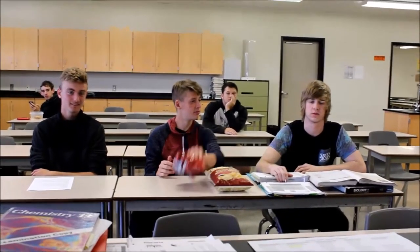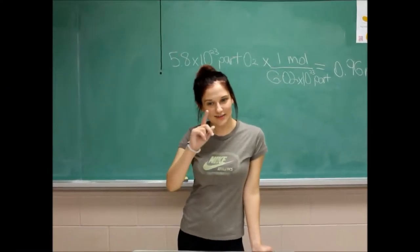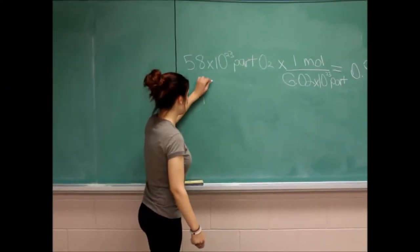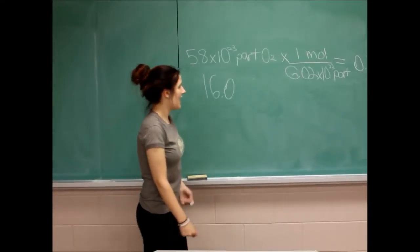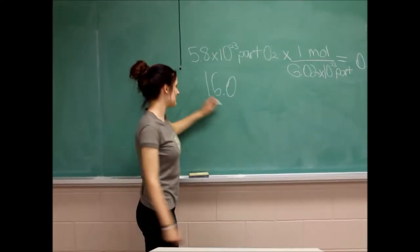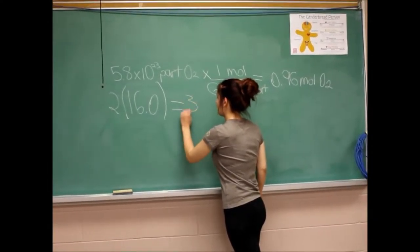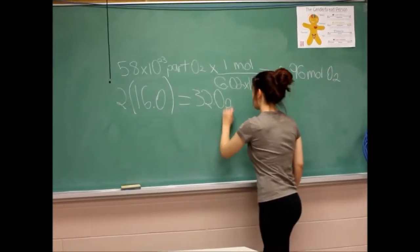How about going from moles to grams? Good question. For that, you need molar mass. So the molar mass of oxygen is 16.0. And since we have 2 here, we want to times this by 2. And that equals 32.0 grams per mole.